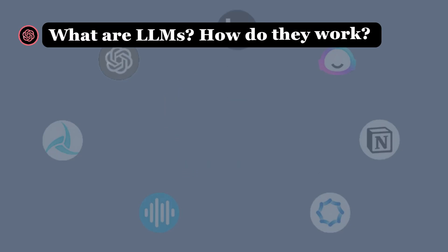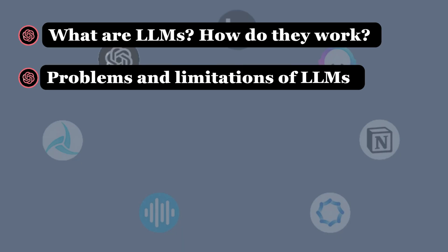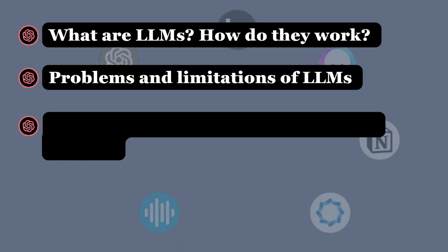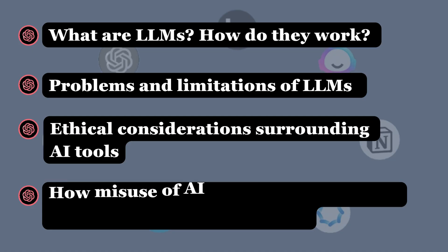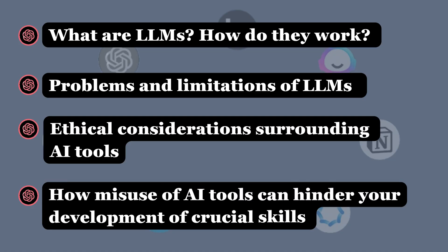We'll begin by exploring what LLMs are and how they work, then move on to discuss their potential problems and limitations, such as AI hallucinations. We'll also examine the ethical considerations surrounding AI tools. Finally, we'll discuss how their misuse can hinder your development of crucial skills, such as critical thinking, which are essential for your success in college.